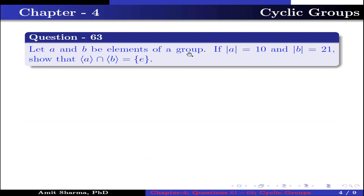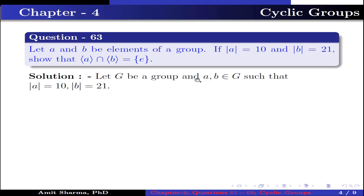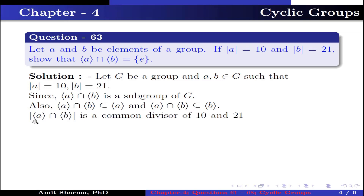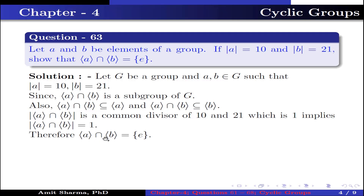Question number 63: Let A and B be elements of a group. If the order of A is 10 and the order of B is 21, show that ⟨A⟩ ∩ ⟨B⟩ = {e}. Let G be a group and A, B ∈ G with order of A equal to 10 and order of B equal to 21. Since the intersection of two subgroups is again a subgroup, ⟨A⟩ ∩ ⟨B⟩ is a subgroup of ⟨B⟩. Its order must be a common divisor of 10 and 21, which is 1. Therefore ⟨A⟩ ∩ ⟨B⟩ = {e}.